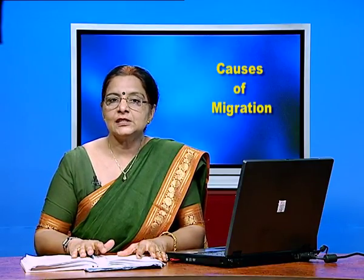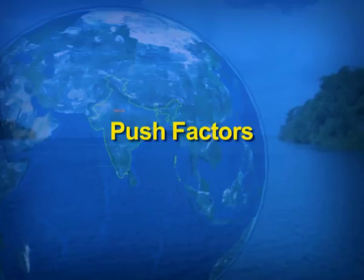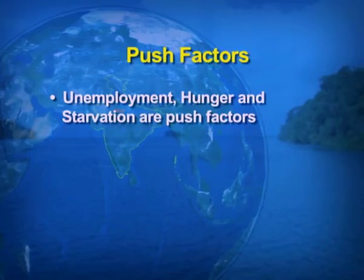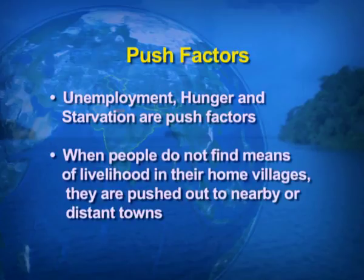Now we take up the push factors. Push means pushing people away from one area to another area. These are generally the negative factors. For example, unemployment, hunger, and starvation — these are the basic push factors that force people to move from their place of residence to another place. When people do not find the means of livelihood in their home villages, they are pushed out to nearby or distant towns. The push factors may lead people to migrate short or long distances.